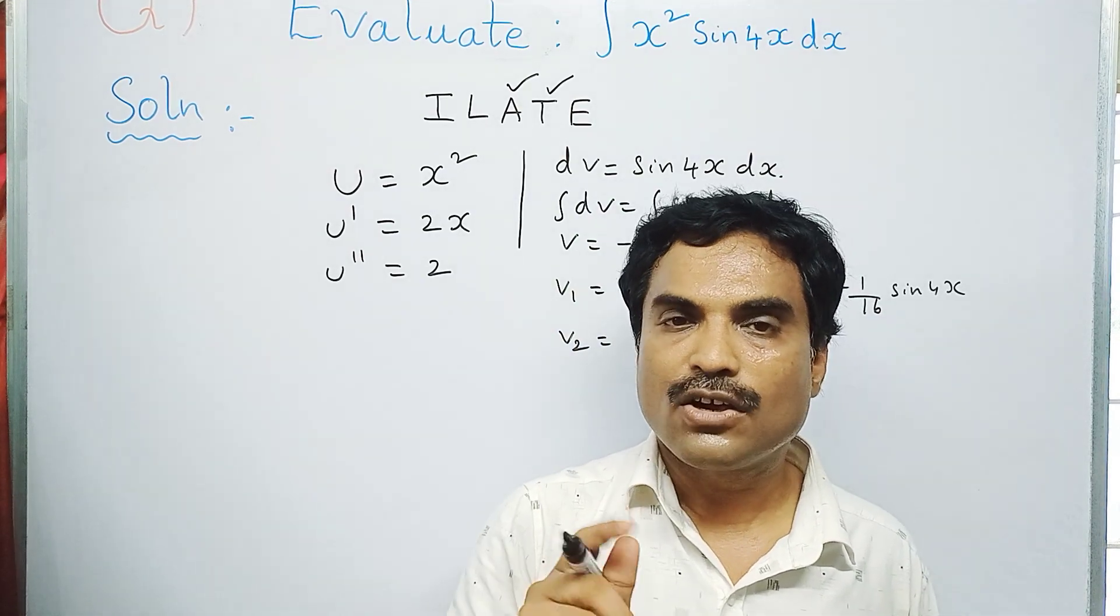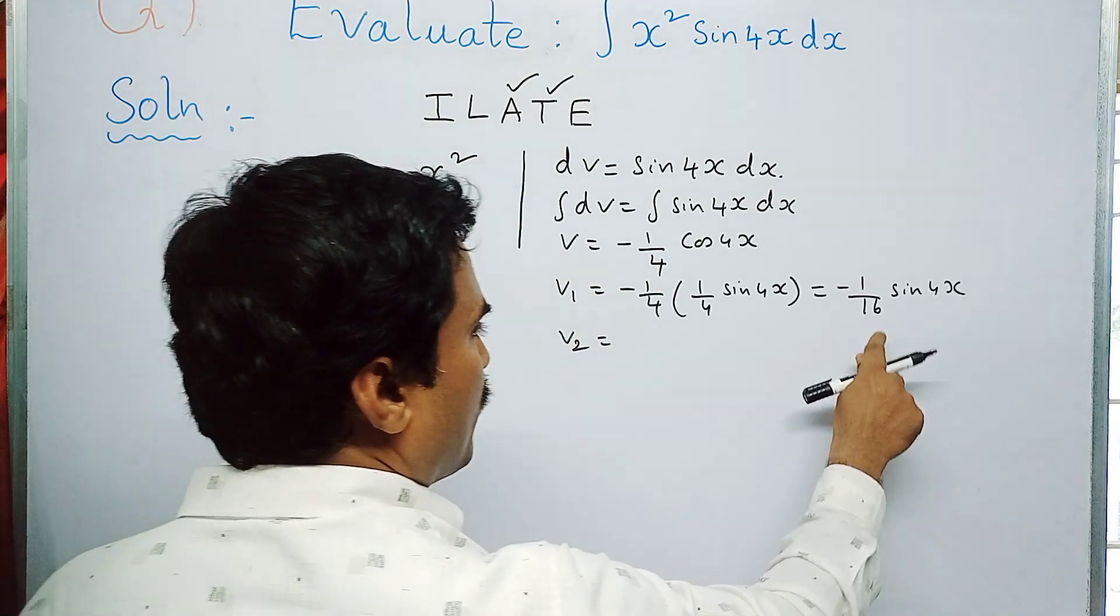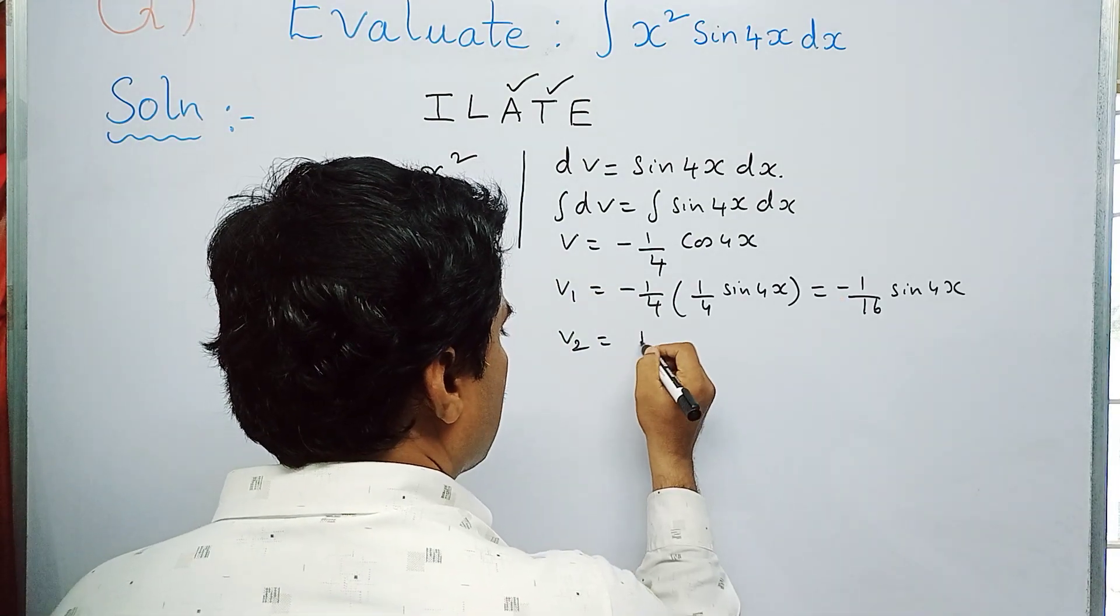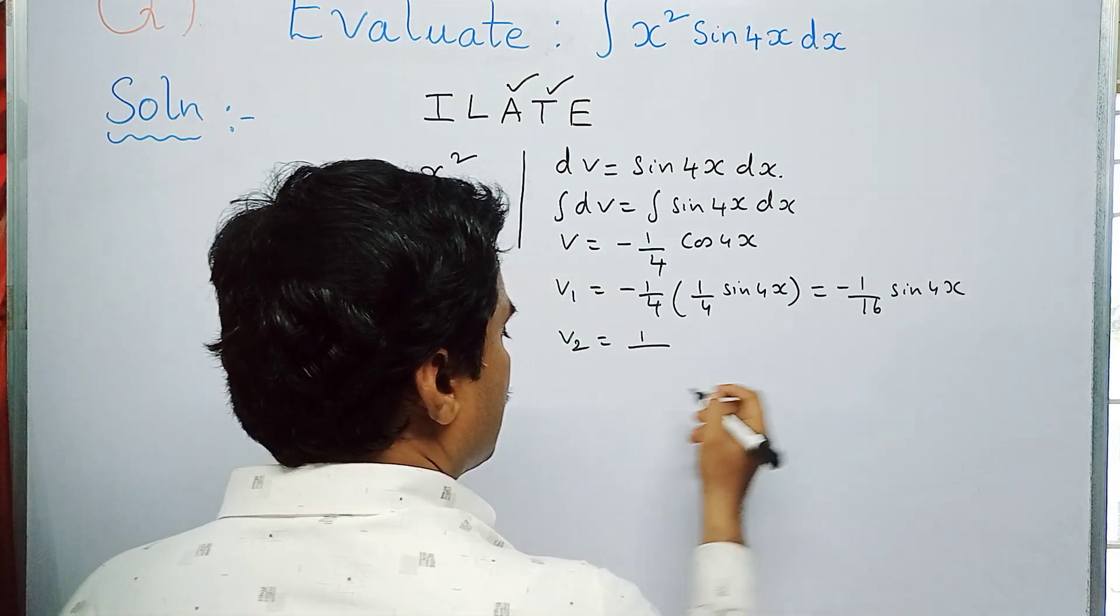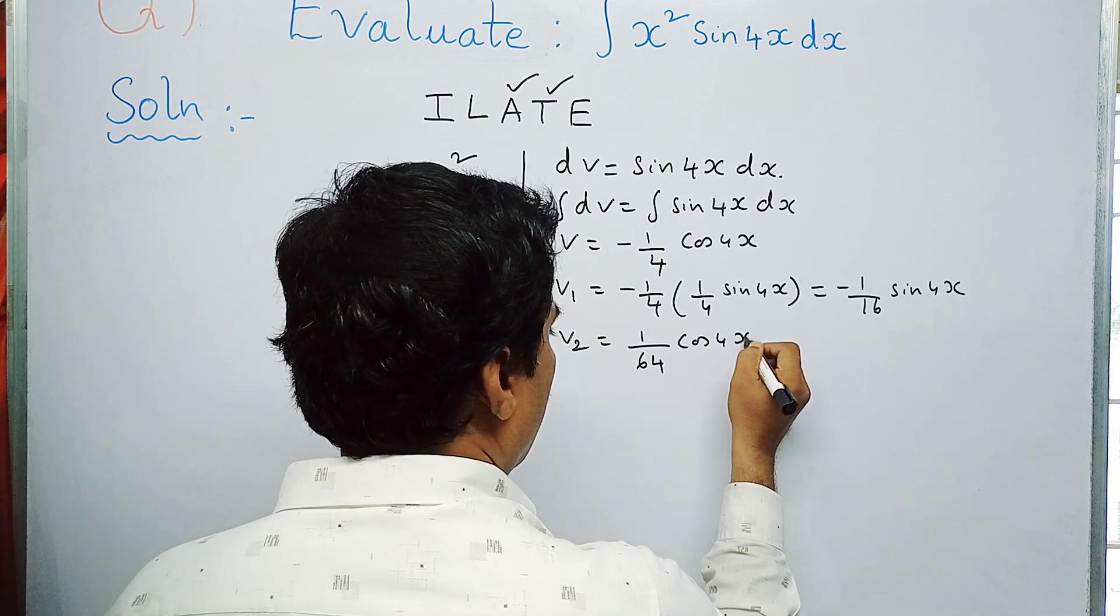The formula is minus 1 by a cos ax, and here a is 4. So minus 1 by 4—already minus is there, so it will become plus—and 4 times 4 is 16, which becomes 64. Sine will become cos, so cos 4x.